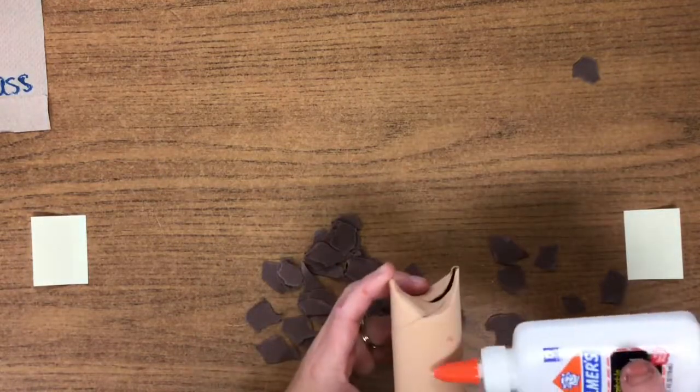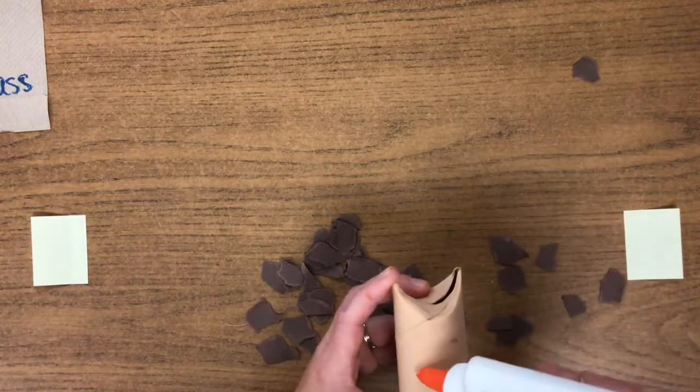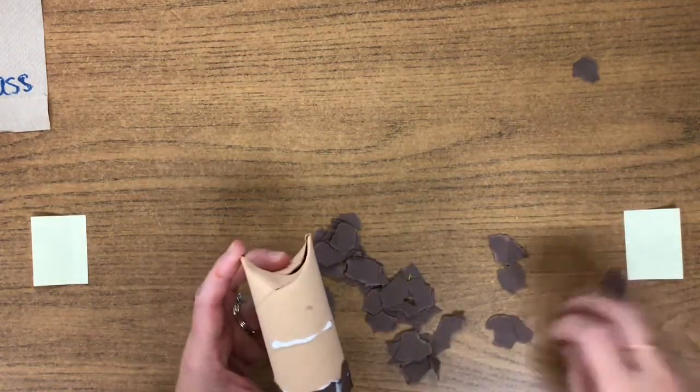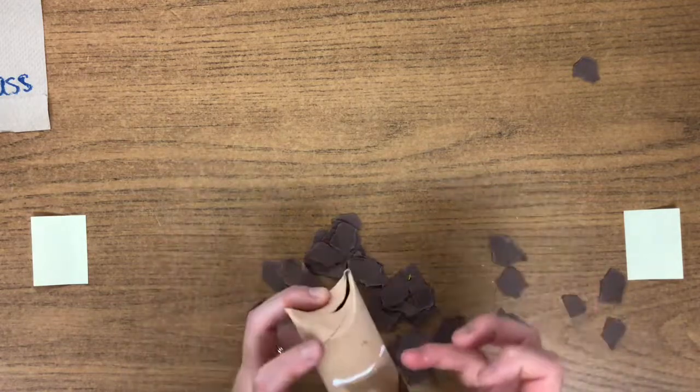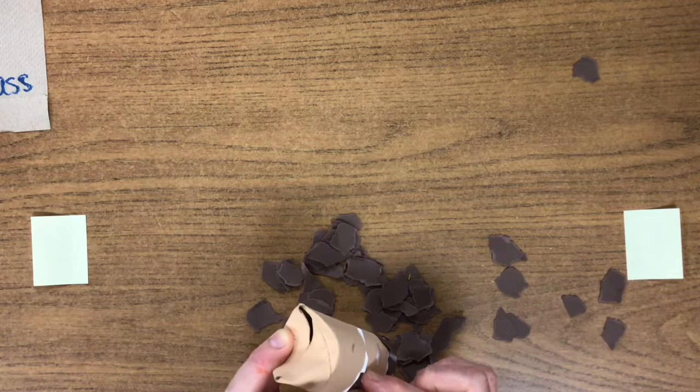We're going to go about halfway up the roll. So not all the way, we need to leave room for a head and repeat the same process. So we're going to put a small strip of glue. We're going to look for those pieces that are straight. And when you add one, hold it for 10 seconds before you move on.